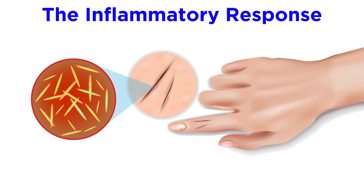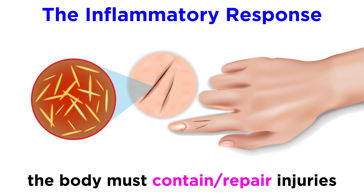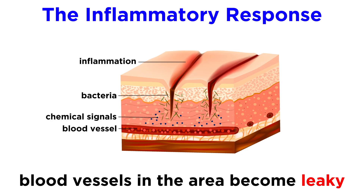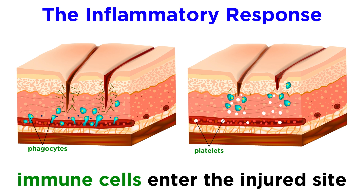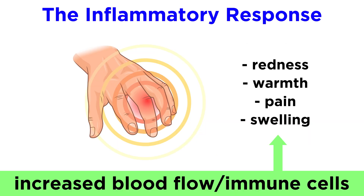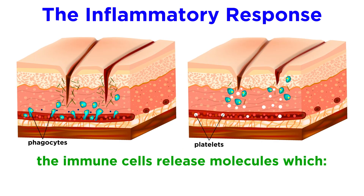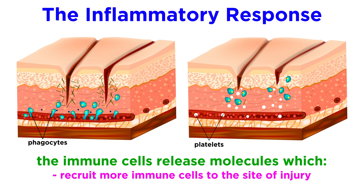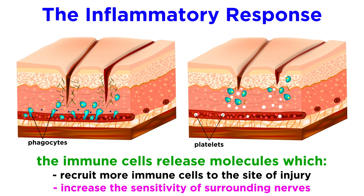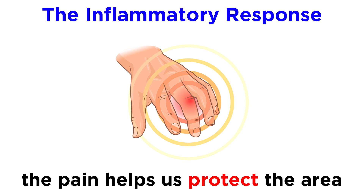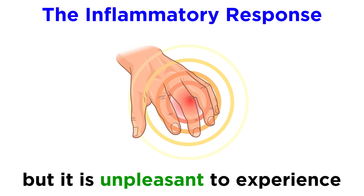We have all experienced the effects of inflammation. After an injury or infection, the body must contain and repair the affected area. Blood vessels in the area of injury become leaky, allowing immune cells traveling in the blood to leave the vessels and enter the injured site to fend off any infectious agents. This increase in blood flow and infiltrating immune cells causes the redness, warmth, pain, and swelling we feel and see in an inflamed area. These immune cells can also release additional molecules which serve to recruit more immune cells and increase the sensitivity of surrounding nerves, thereby intensifying the pain we feel when that area is touched. This pain keeps us mindful of the affected area, leading us to protect it from further damage, which is useful from an evolutionary perspective, but is nevertheless unpleasant to experience.